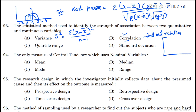The standard deviation is derived from the mean. A high standard deviation means data points are spread far from the mean, while a low standard deviation means data points are clustered close to the mean.